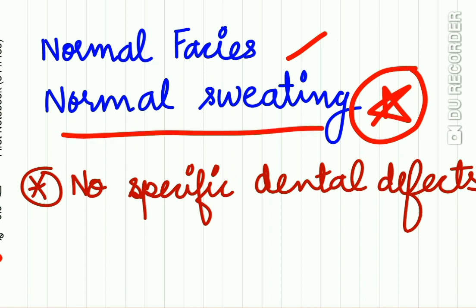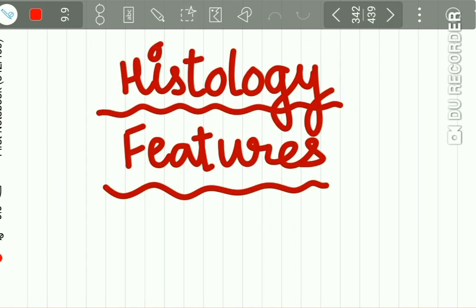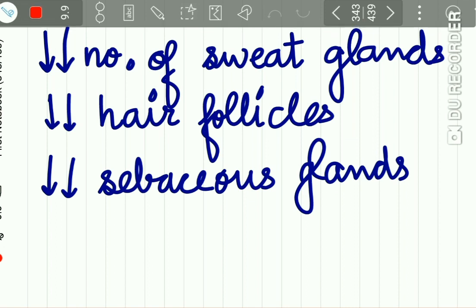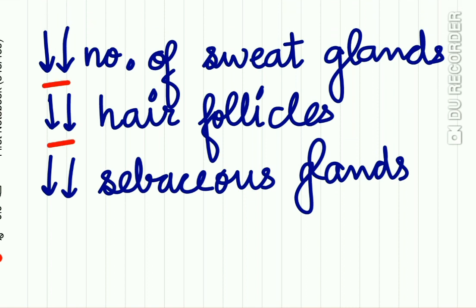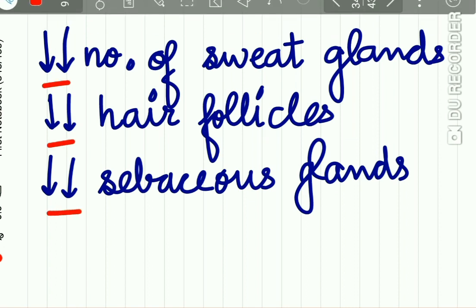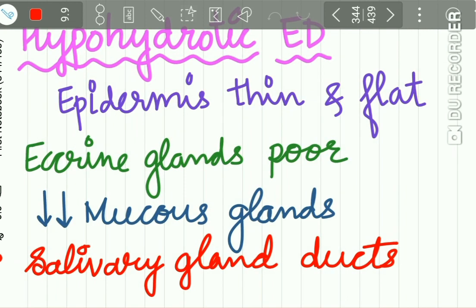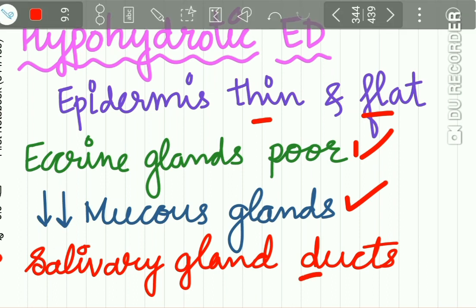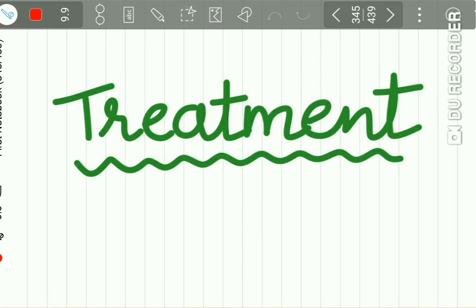There are no specific dental defects in hydrotic ectodermal dysplasia. Histologically, lesions show reduced number of sweat glands, hair follicles, and sebaceous glands. In hypohydrotic ectodermal dysplasia, the epidermis is thin and flat, eccrine glands are poorly developed, there is a reduced number of mucous glands, and the salivary gland ducts show inflammatory changes.